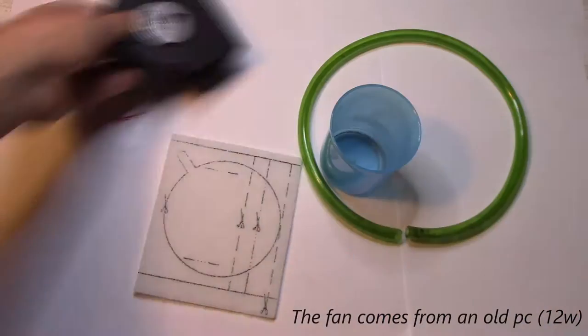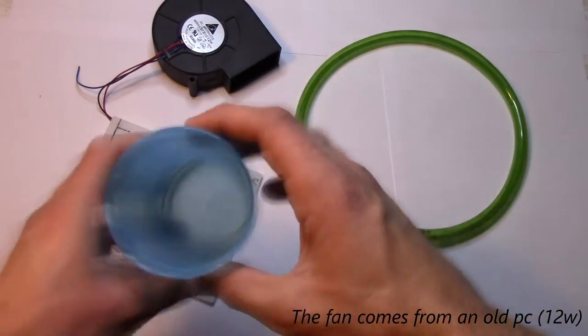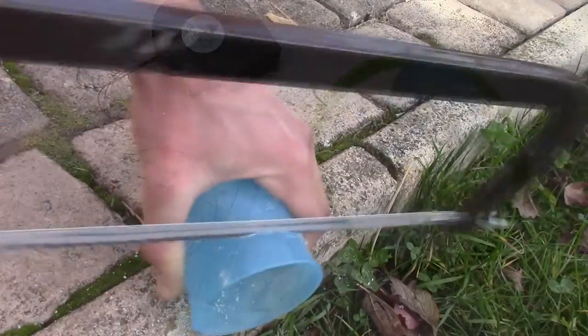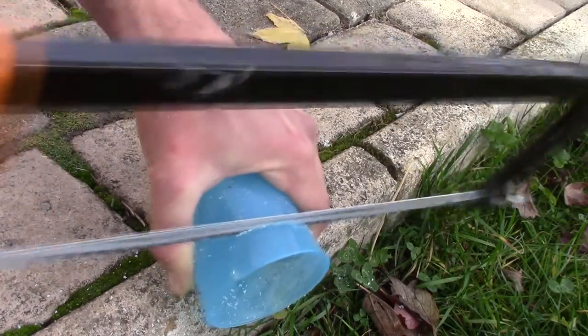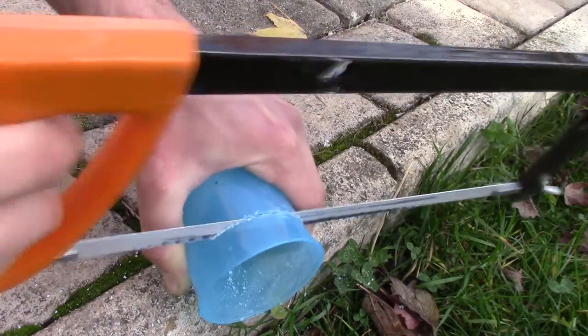Everything you need is a centrifugal fan, a flexible pipe, a plastic glass, and an air filter from a vacuum cleaner.